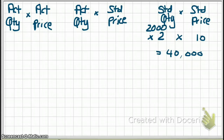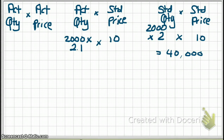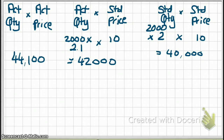For the actual quantity, we're told that for the 2,000 planters, you actually used 2.1 labor hours per planter. So actual quantity is 2,000 times 2.1, multiplied by the standard price of $10, giving us $42,000 in the middle column. For the left column, you don't need to calculate it — they told you the actual variable manufacturing overhead was $44,100. Now we have the three numbers and can calculate our variances.